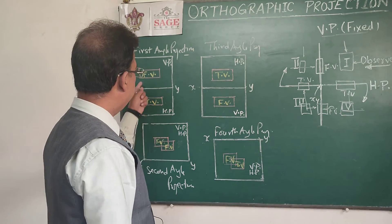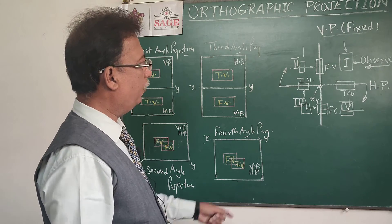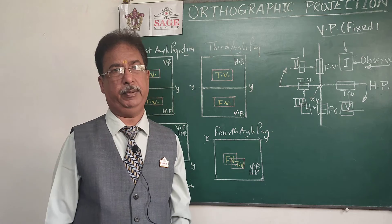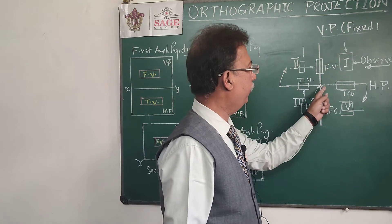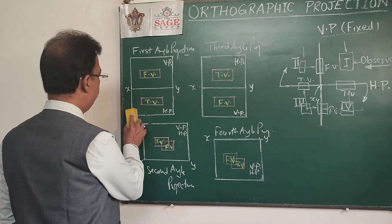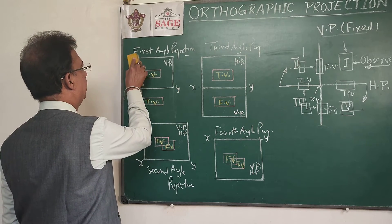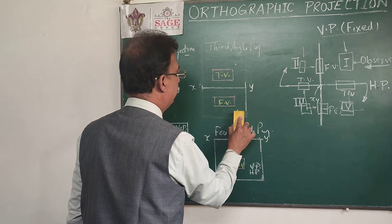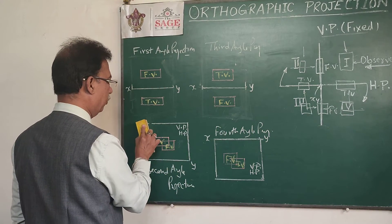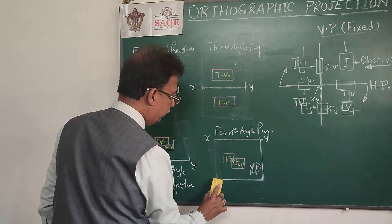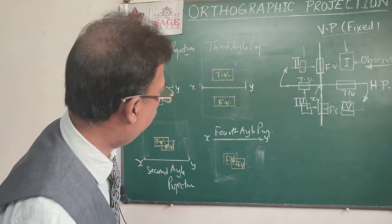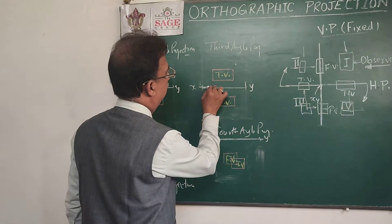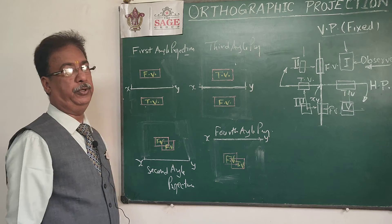The reference line alone is sufficient to indicate HP and VP — there is no need to draw the rectangular box for the planes. Whenever we draw the front view, the reference line represents the horizontal plane; whenever we draw the top view, the vertical plane coincides with the reference line. Looking at just the reference line and projected views, we can identify whether it is first, second, third, or fourth angle projection. If the front view is above and the top view is below the reference line, that is first angle projection. If the top view is above and the front view is below, that is third angle projection.